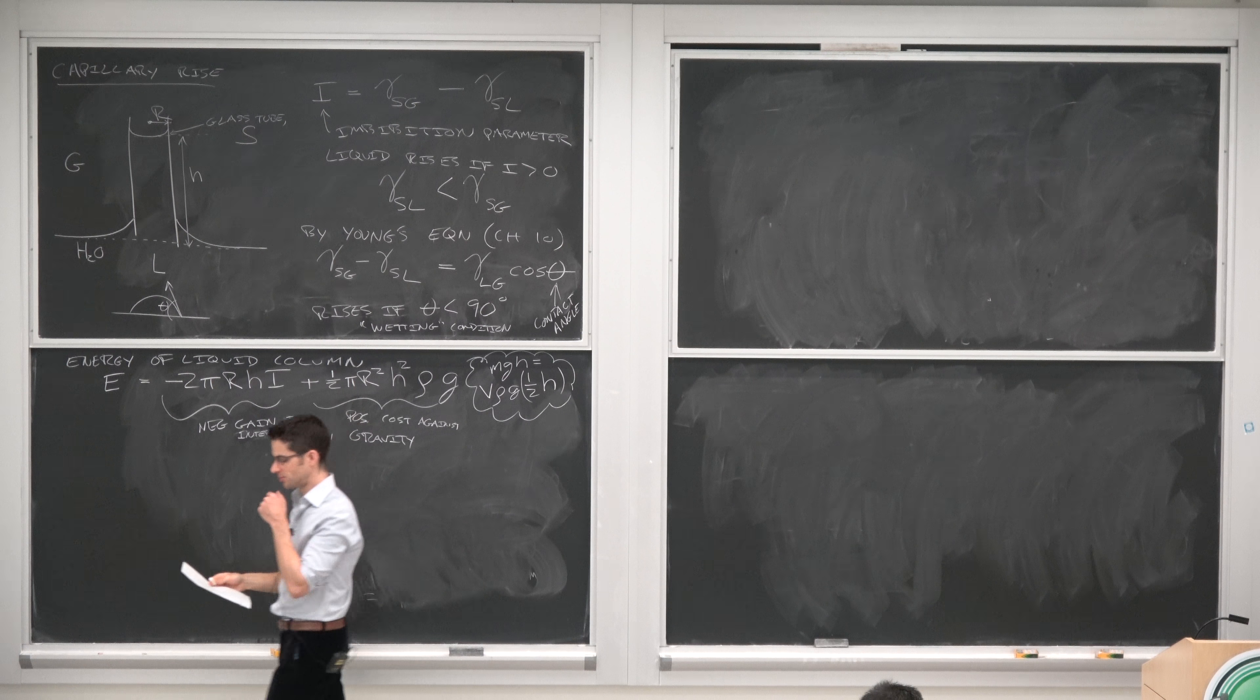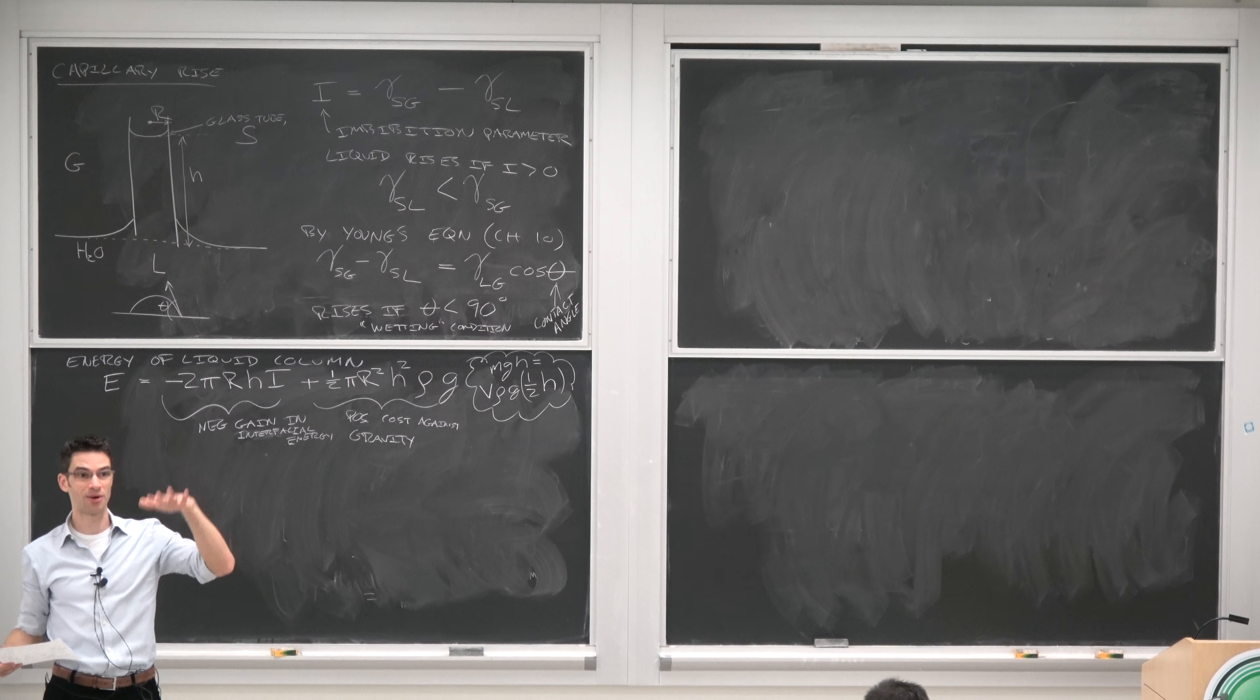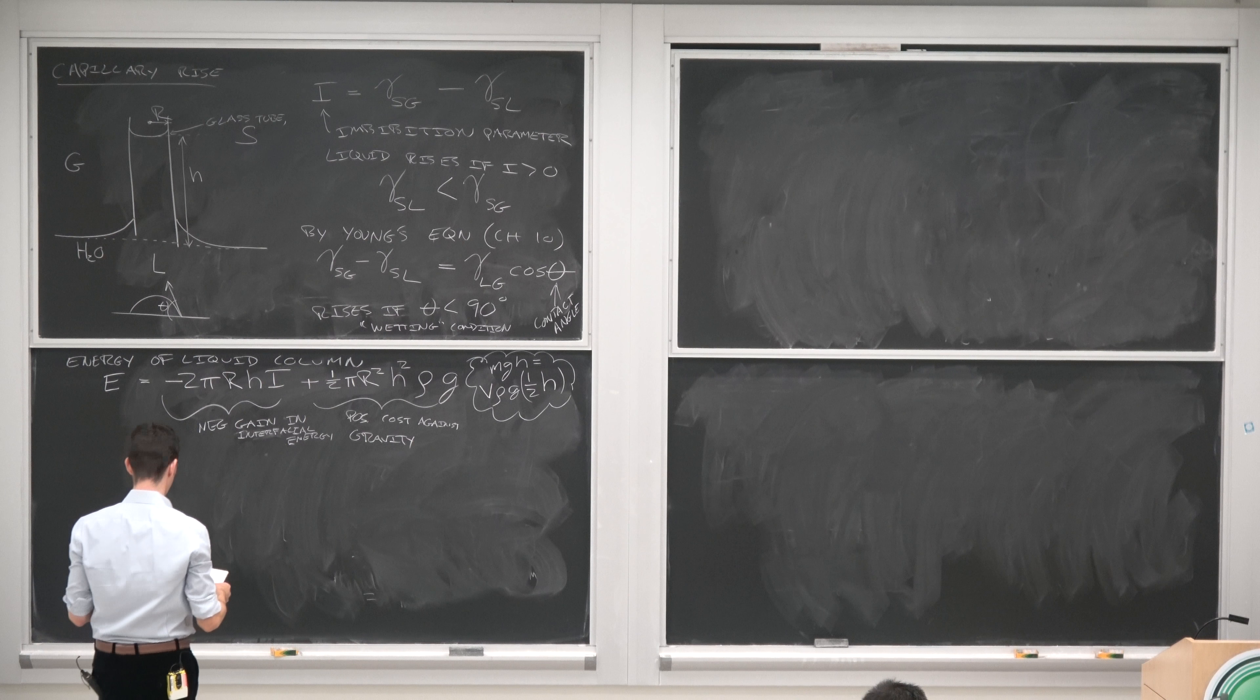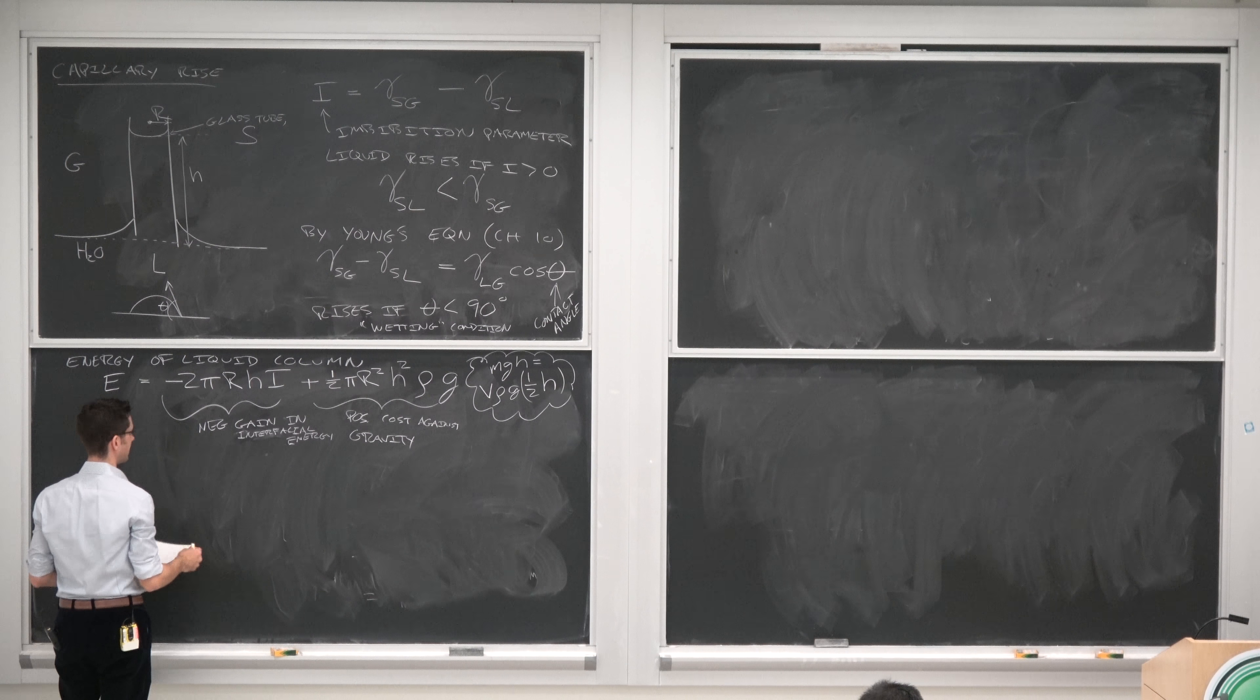Now in order to see at equilibrium how high the water is going to rise, we take the derivative and set it equal to zero and we solve for H.